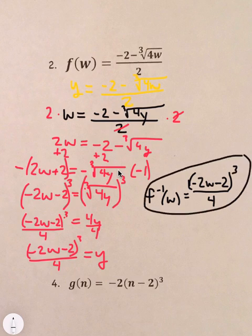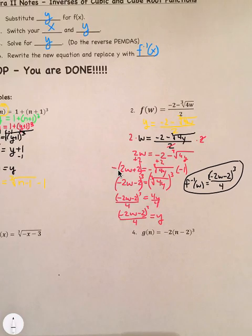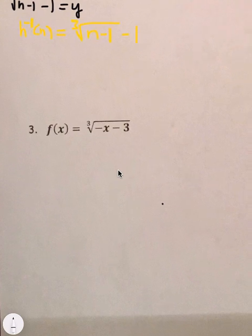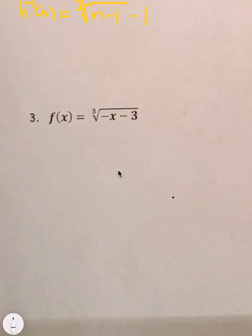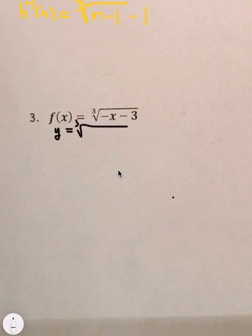That one was a lot of work. But, you can kind of see if you go step by step you can get through it. Alright, number 3. f of x equals the cube root of negative x minus 3. So, this one more set up like normal f of x. So, we change this to y equals the cube root of negative x minus 3. That's step 1.